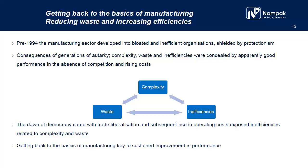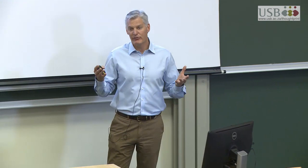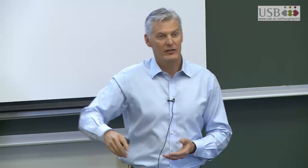You remember, pre-94 there was a policy of autarky. Autarky is all about being self-sufficient, to replace all imports, to manufacture everything yourself. But the consequence of that is that today we have manufacturing capacity in South Africa that is not competitive on a global scale. We make things in South Africa that we should be importing from China. And some of those businesses have gone out of business, and that explains the precipitous decline in the contribution of manufacturing to the economy.